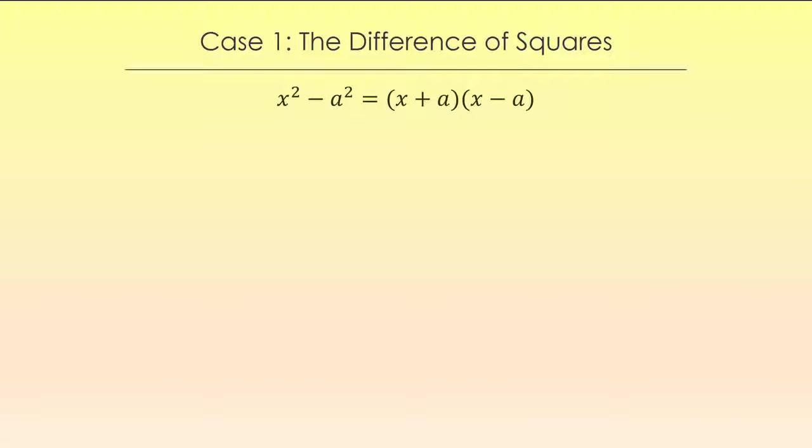So difference of squares. And what's happening here is that when we foiled out this type of example, we got x squared minus ax plus ax and then minus a squared. So these middle terms cancel out and that's why we end up with a binomial instead of a trinomial.